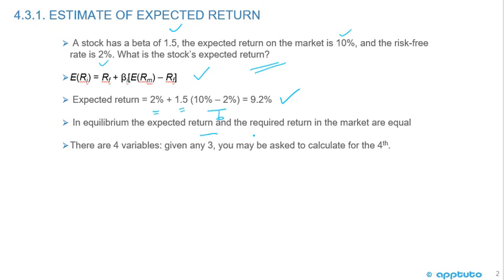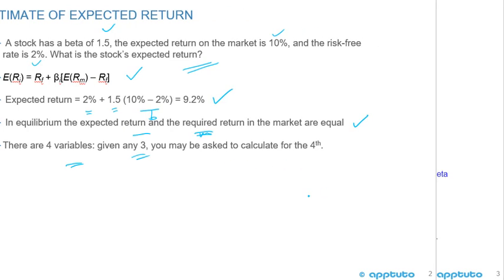In equilibrium, the expected return and the required return in the market are equal. It's important that sometimes with CAPM we talk about it as being the required return. There are four variables — given any three, you may be able to calculate the fourth.